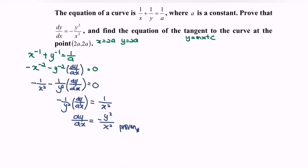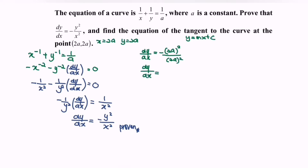The second task is to find the equation of the tangent, where dy/dx equals the gradient. Substitute the values y equals 2a and x equals 2a into dy/dx: we have negative (2a) squared over (2a) squared.